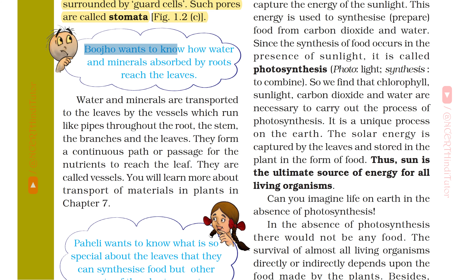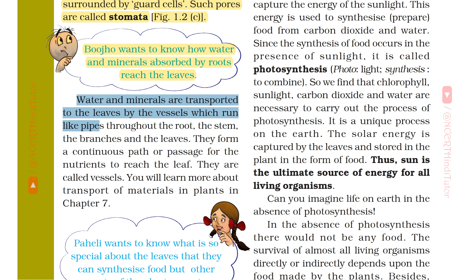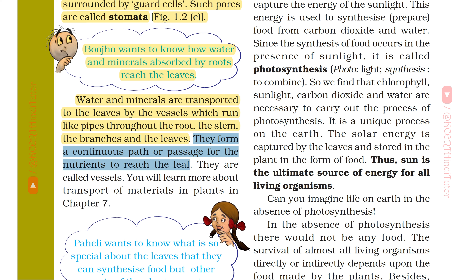Bujo wants to know how water and minerals absorbed by roots reach the leaves. Water and minerals are transported to the leaves by vessels which run like pipes throughout the root, the stem, the branches and the leaves. They form a continuous path or passage for the nutrients to reach the leaf. They are called vessels. You will learn more about transport of minerals in plants in Chapter 7.